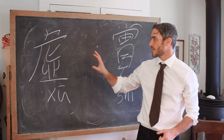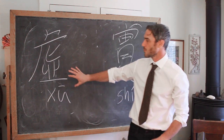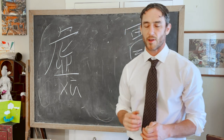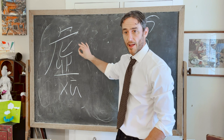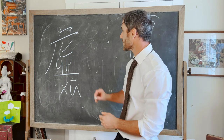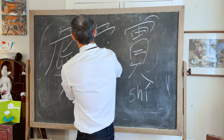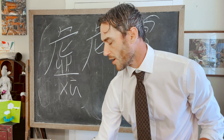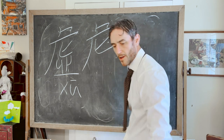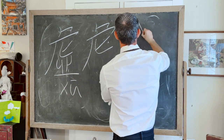Our translation of this as empty and full is not a perfect translation of the original Chinese. If we look at the character for emptiness, we can get more of a sense of its actual meaning. This part at the top was originally a depiction of a tiger.